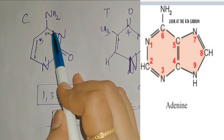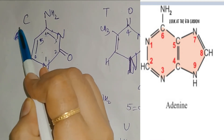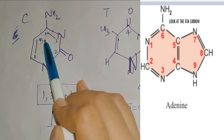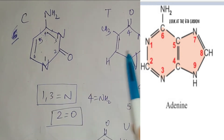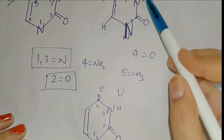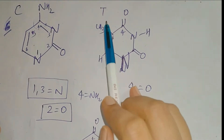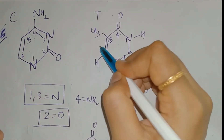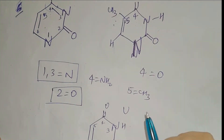Remember in purines the 6th position was special. Here in pyrimidines, although it is numbered as 4, that position is also special. In case of cytosine, we have NH2 at the 4th position. In case of thymine and uracil, we have oxygen at the 4th position. Thymine and uracil are exactly similar in structure except one difference: in thymine at the 5th position we have a CH3 — a methyl group. In uracil there is no methyl group. This is the only difference between these two structures.